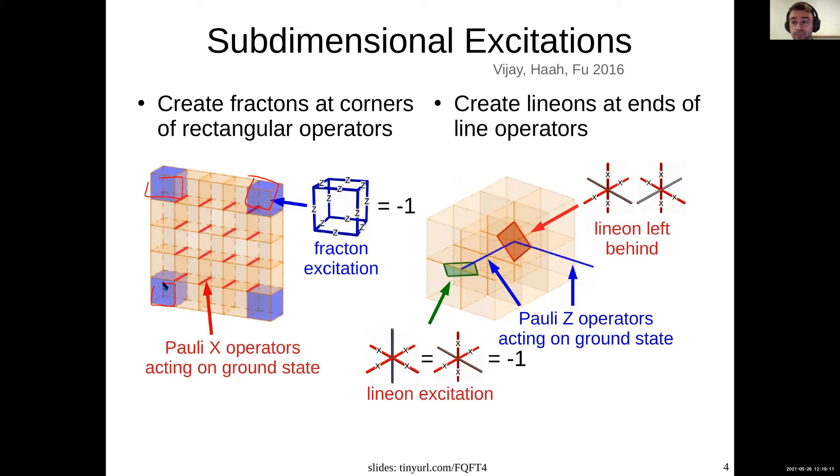In the magnetic sector, there are these lineon excitations. Acting with strings of Z operators creates excitations at the end of the string, but also wherever the string bends. And that means that these excitations are lineons. If they try and go in a different direction, you end up creating additional excitations. In this case, at this kink, we create these two excitations, which is another lineon which can move in the Z direction.